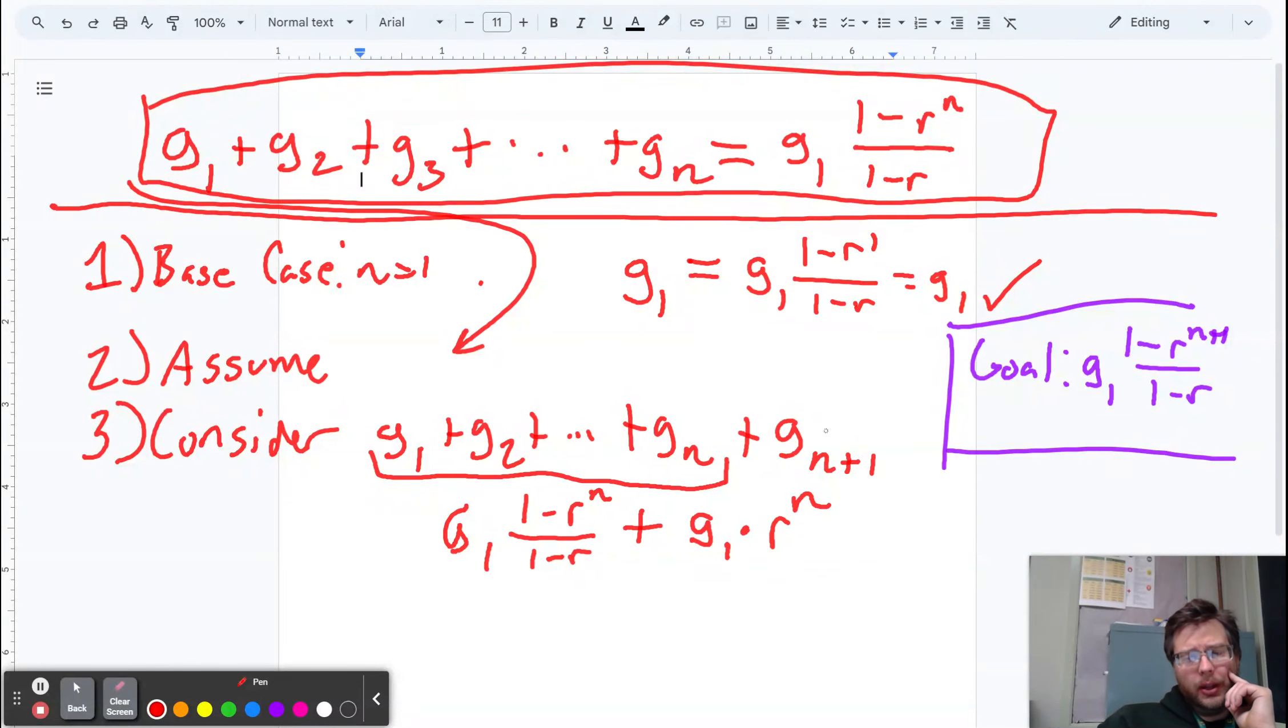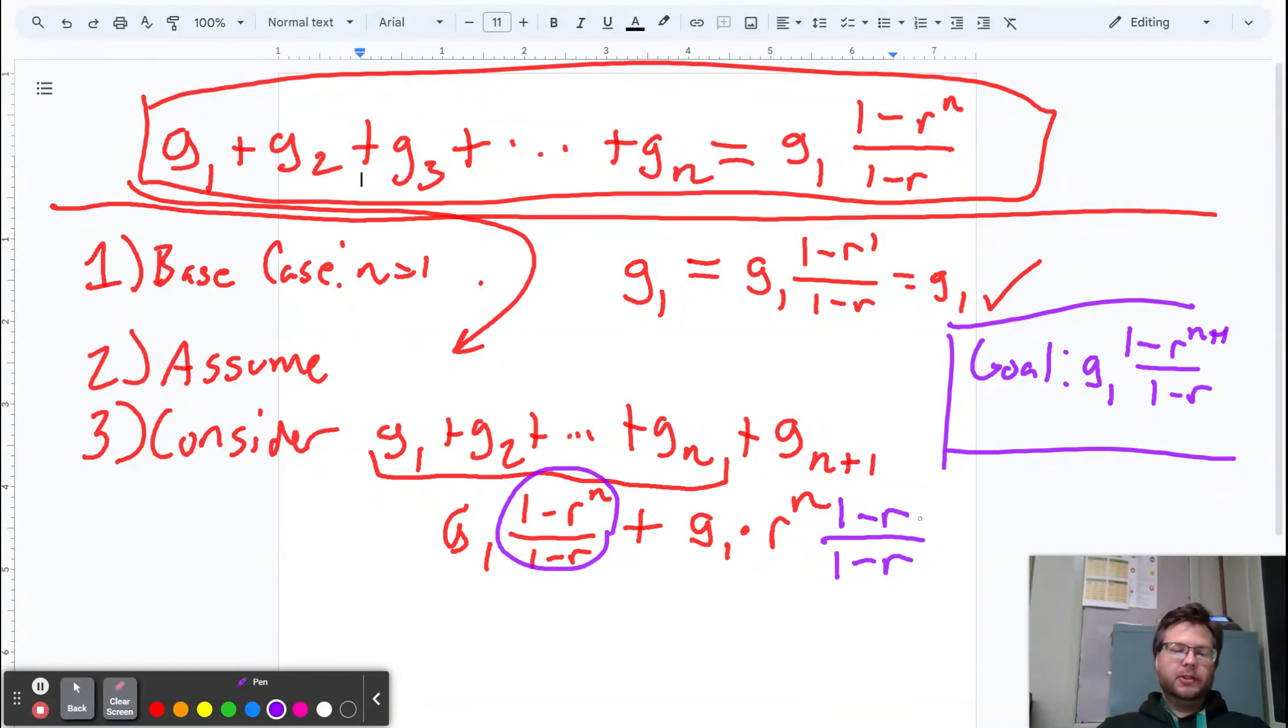I'm going to do a little weird trick here because I've got a fraction right here, but I don't have a fraction right here. So I'm just going to bring a fraction into it, 1 minus r, to make there be a common denominator, 1 minus r over 1 minus r. And I'm allowed to do that because I'm really just multiplying by the number 1. 1 minus r over 1 minus r is just the number 1.